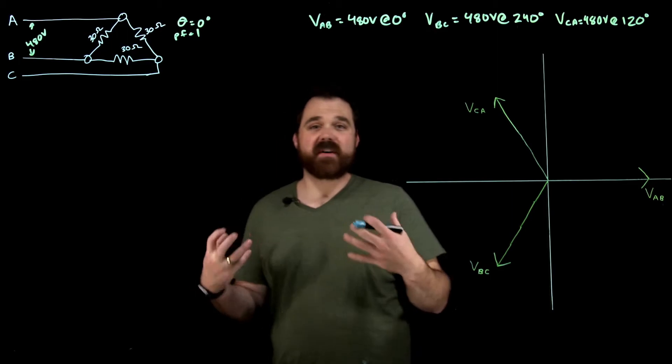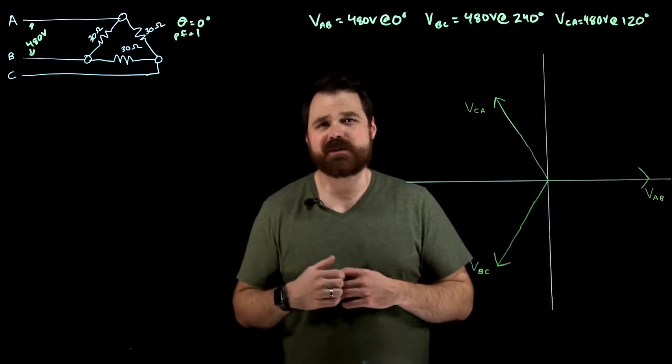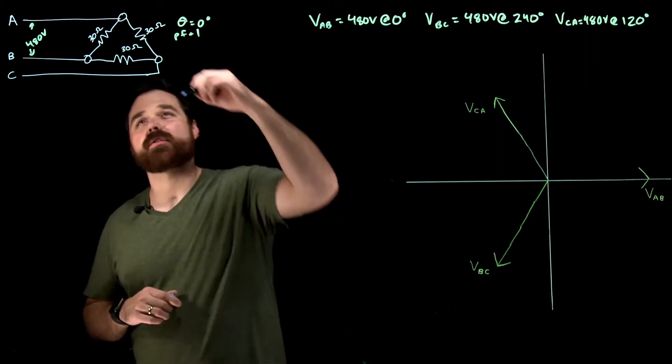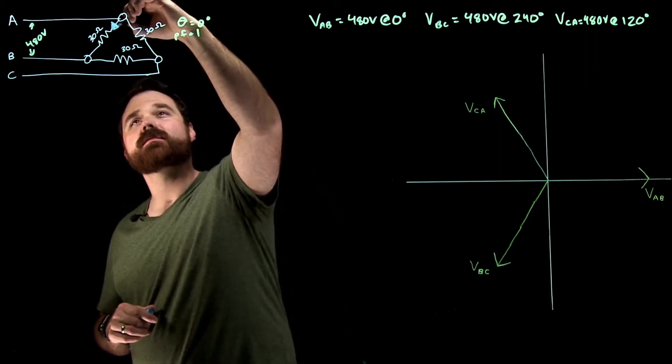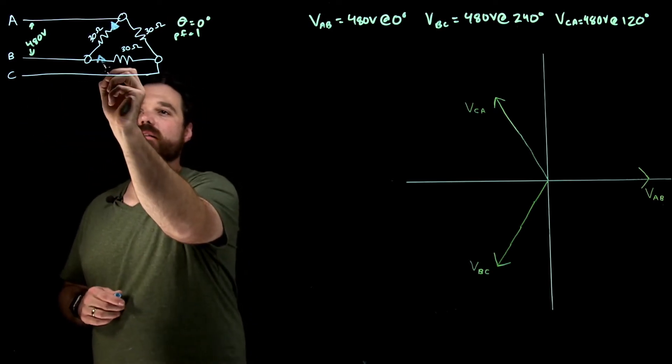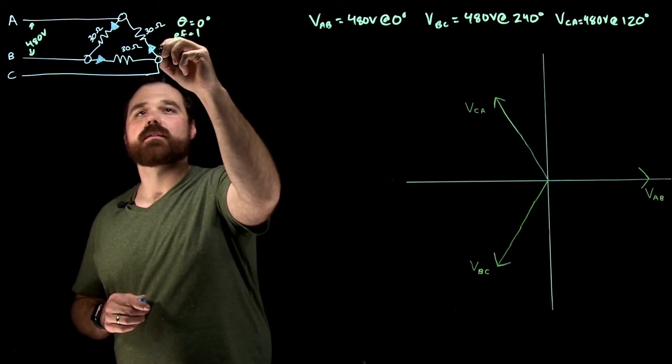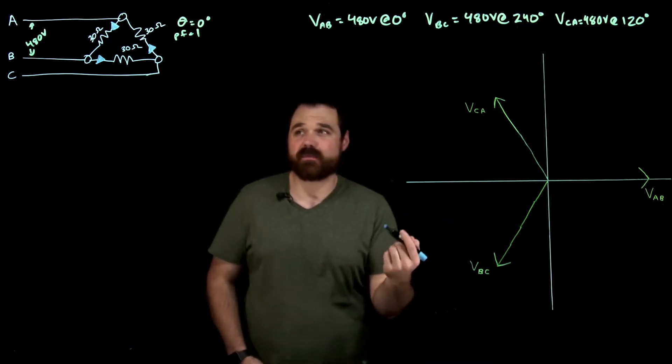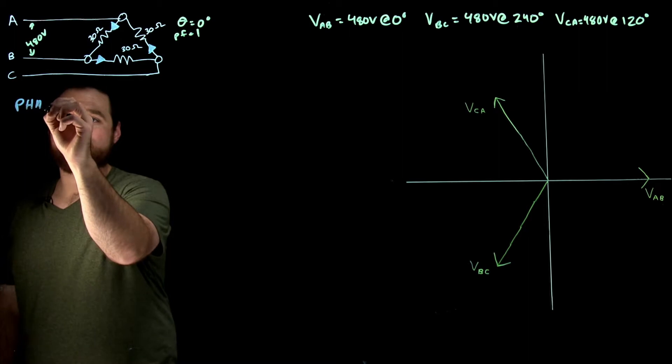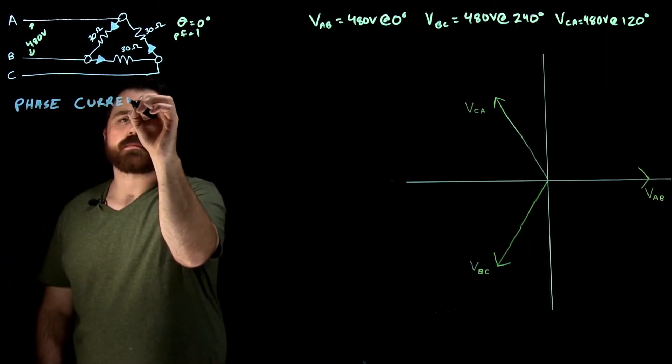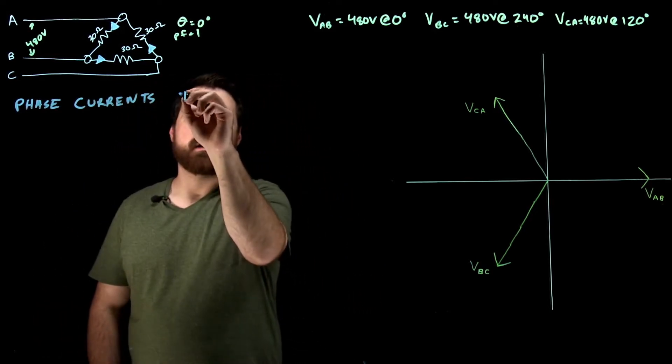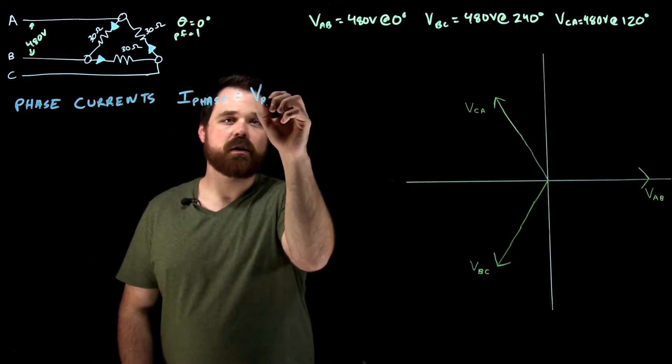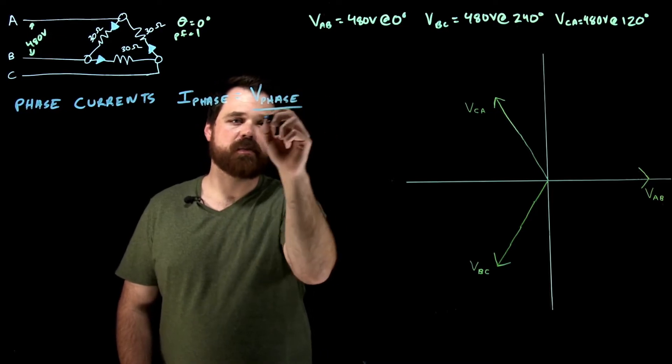My first step, I'm going to solve the phase currents. I'm going to have three phase currents here. I'm going to have a current going from A to B, a current going from B to C, and a current going from C to A. In order to solve my phase currents, I'm going to use the formula I of my phase equals V of my phase divided by Z of my phase.